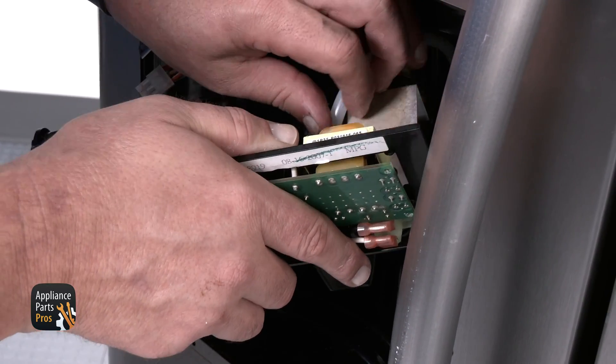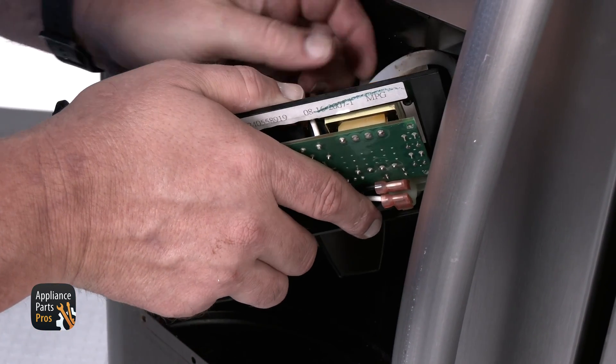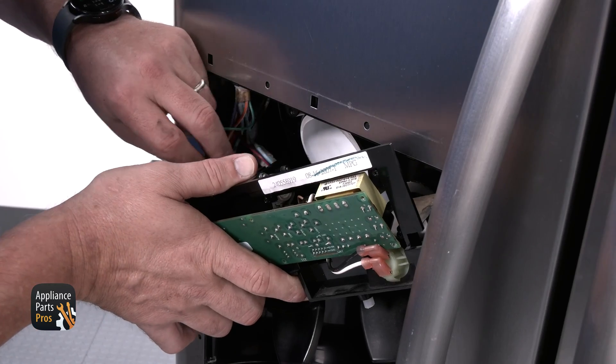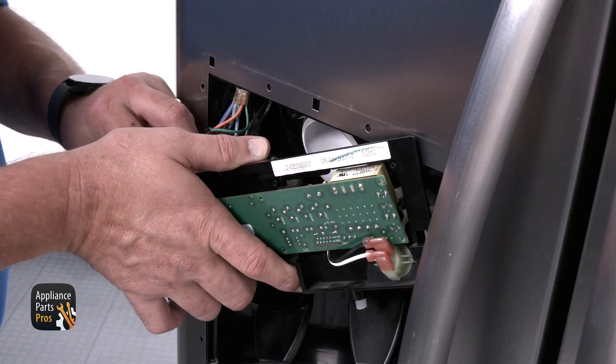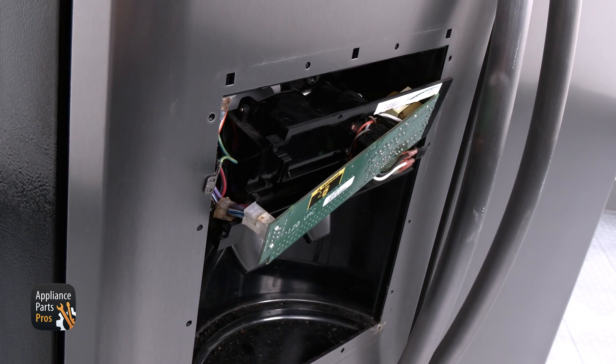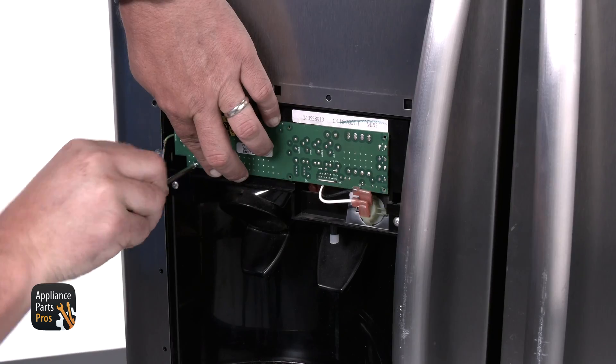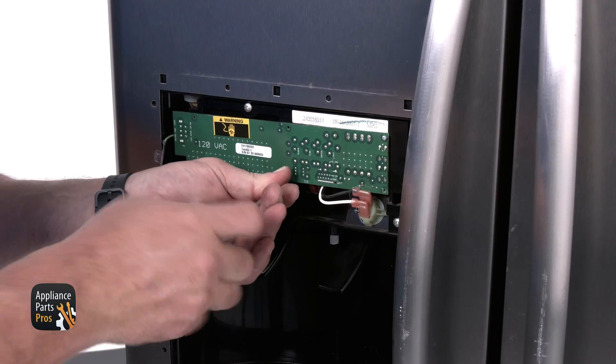To reassemble, take the dispenser housing and reinsert the water line into the water dispenser hole. After that, reconnect the freezer door wire harness to the back of the control board. Install the three screws to secure the housing, followed by the six screws holding the control board.